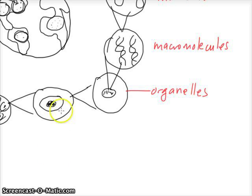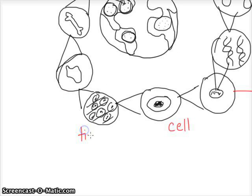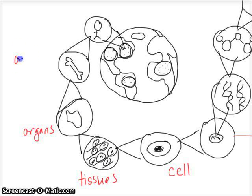Cells associate to form tissues. In most complex organisms, tissues organize into functional structures called organs. So in this example, we have the heart. Humans have several organ systems.